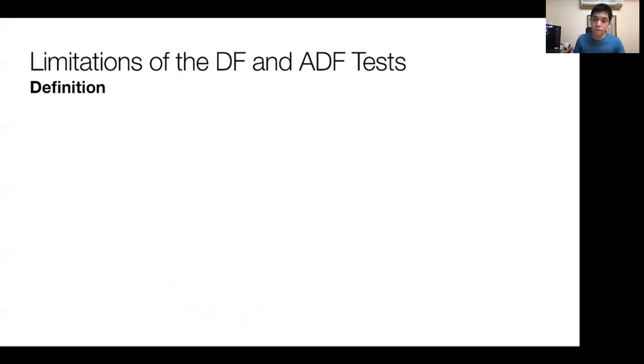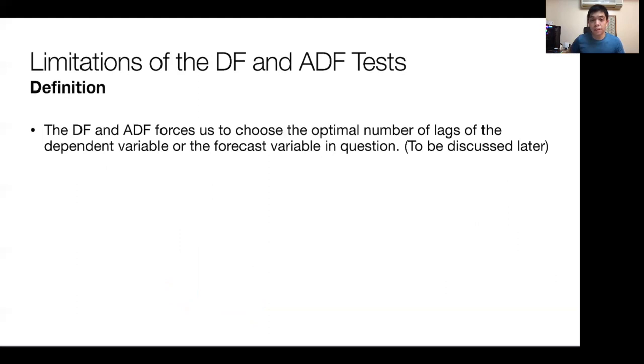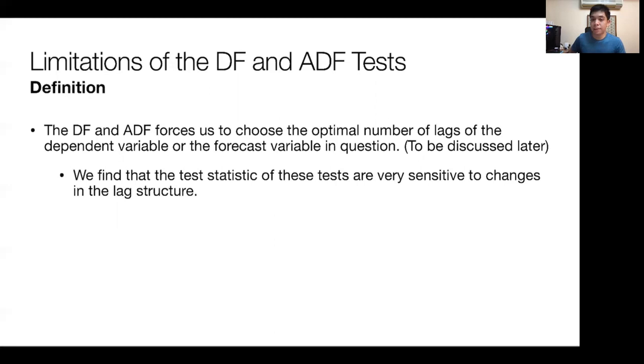What are the key limitations of the Dickey-Fuller and augmented Dickey-Fuller tests? The DF and ADF tests force us to choose the optimal number of lags of the dependent variable or forecast variable in question. We have to perform lag selection tests to determine the number of lags, but in reality, these are just criteria that we follow. It doesn't necessarily mean they're the right lag order to follow.